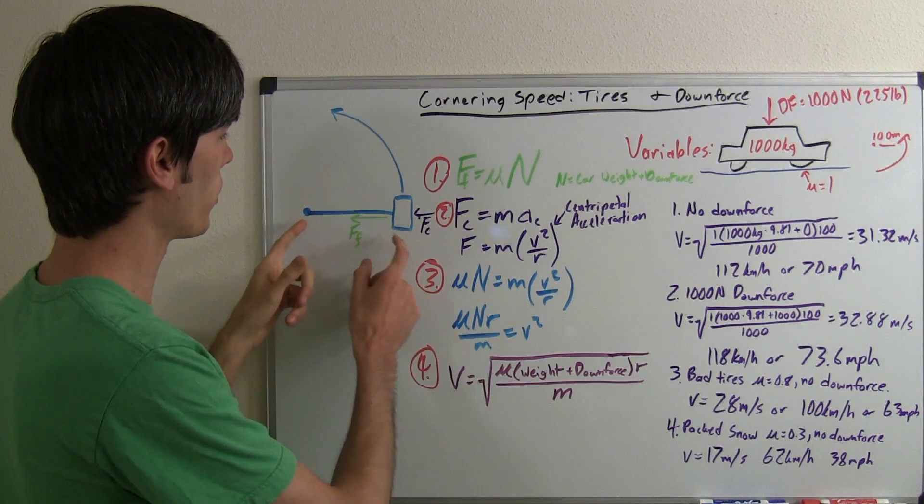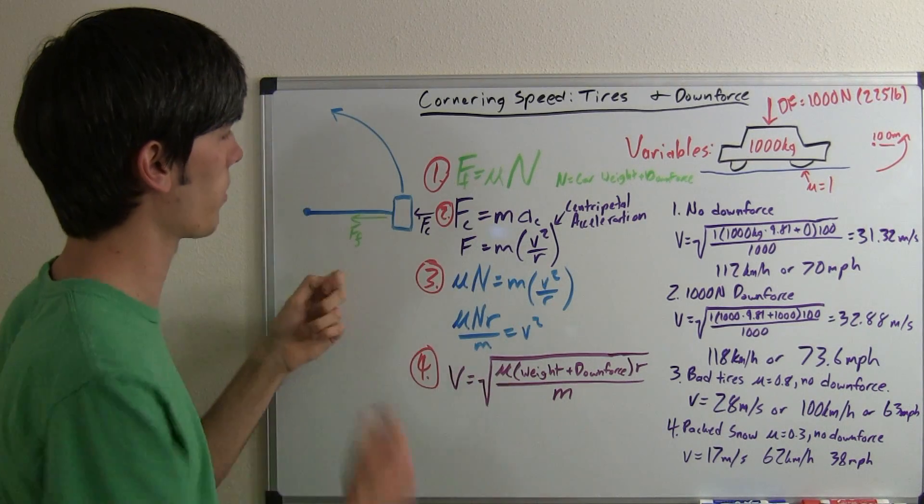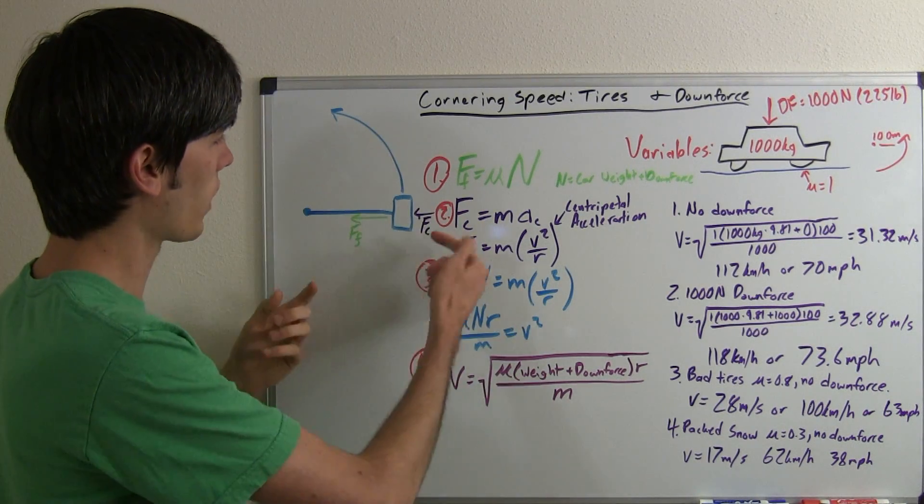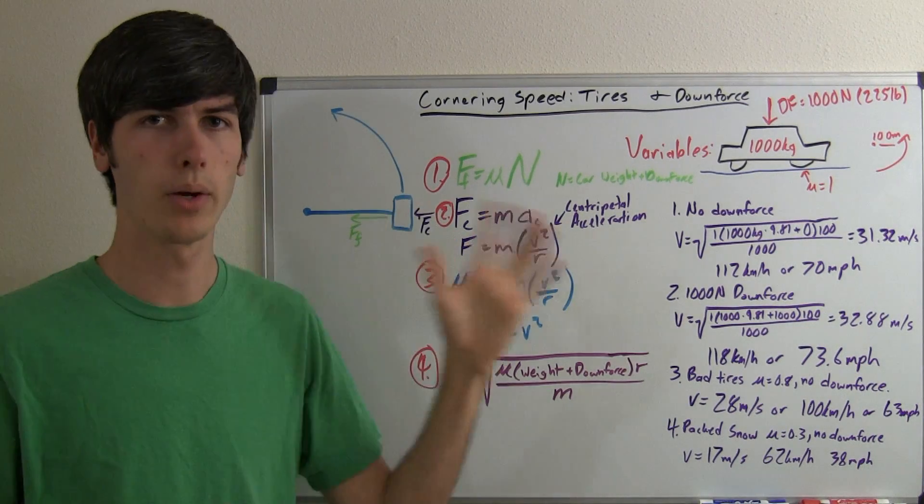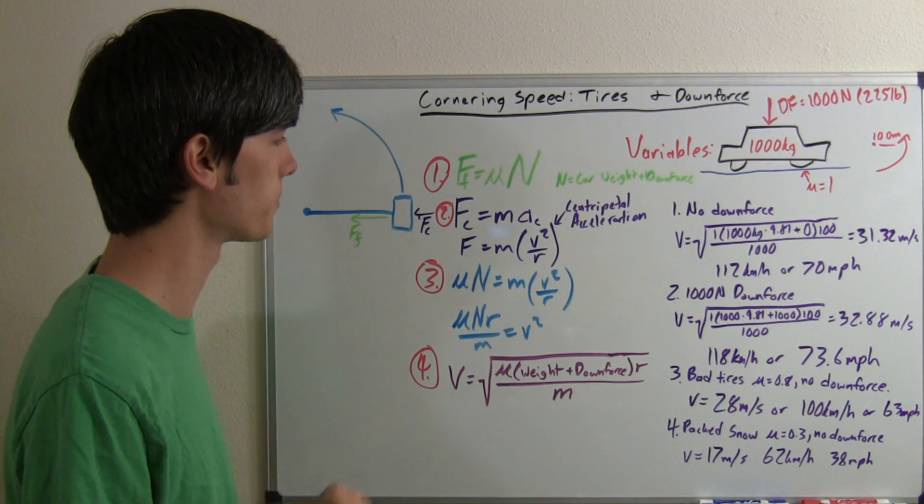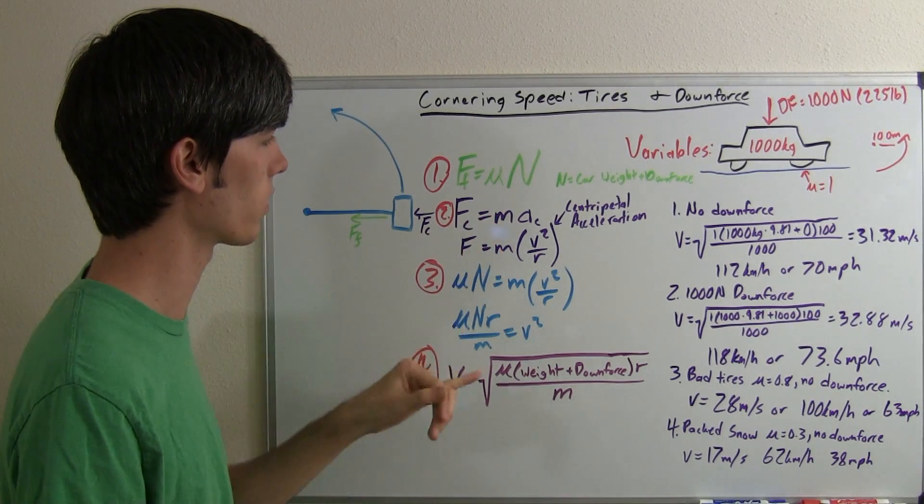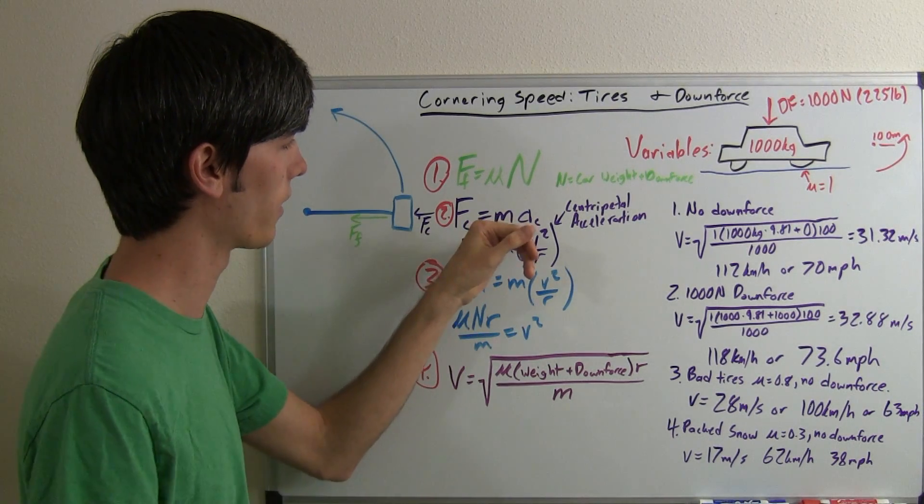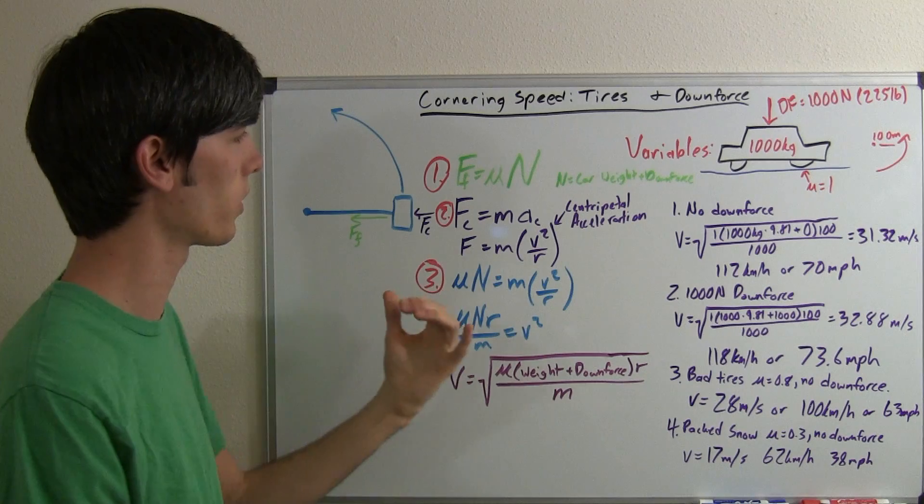Now the other thing we know is if you have an object and it's rotating about a point, then it's going to have an inward acceleration. We know force is equal to mass times acceleration. We know what the mass of the vehicle is. And acceleration, this is going to be centripetal acceleration.